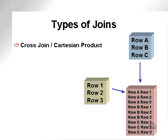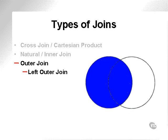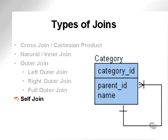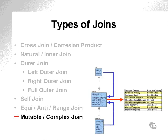Types of joins. What types of joins do we have? We have cross joins, natural joins, outer joins of which there are three types, self joins, equi, anti or range joins, and mutable or complex joins.